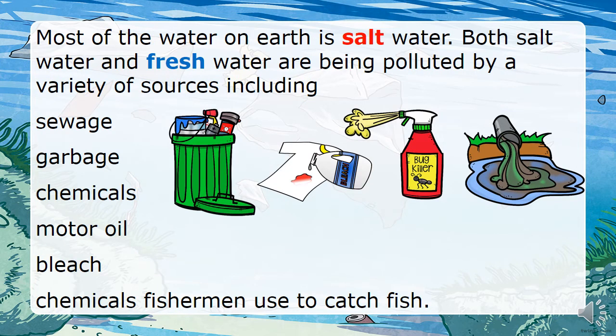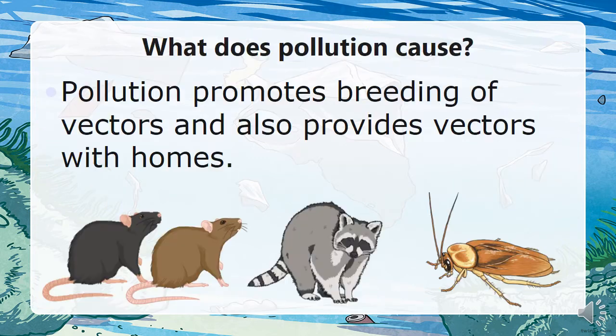Most of the water on earth is salt water. Both salt water and fresh water are being polluted by a variety of sources, including sewage, garbage, chemicals, motor oil, and bleach. Chemicals are also used by fishermen to catch fish, and these are polluting the water. Pollution also promotes the breeding of vectors and provides them with homes.